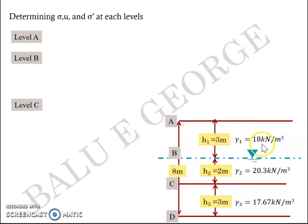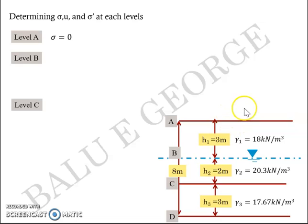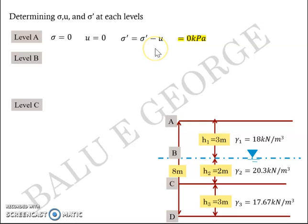Gamma values are: γ₁ = 18 (bulk), γ₂ = 20.3 (saturated), γ₃ = 17.67 (saturated). Heights are 3, 2, and 3 meters. At level A (ground surface), total stress σ = 0 since there is no weight above. Neutral stress u = 0 because there is no water table above it. Therefore effective stress σ' = σ − u = 0 kPa.